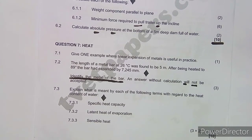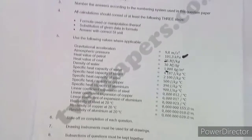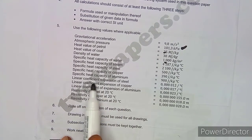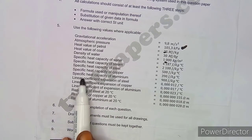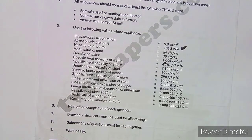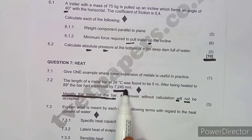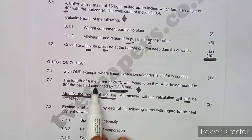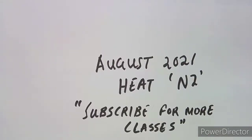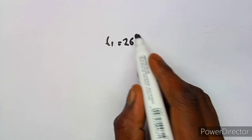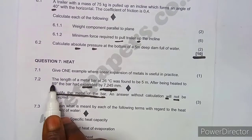How can you identify the metal? The linear coefficient of expansion is different for every type of metal — the same way resistivities differ for different materials. We can take advantage of the linear coefficient of expansion because we are given the change in length. Let's list the information: T1 = 26°C, T2 = 89°C.